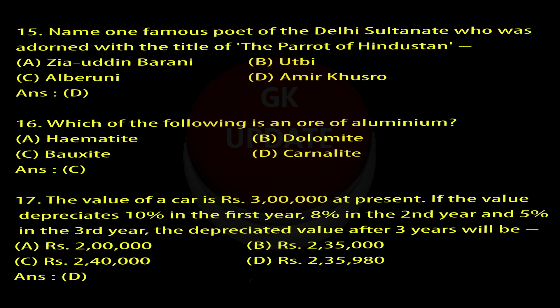Question 17: The value of a car is Rs. 3,00,000 at present. If the value depreciates 10% in the 1st year, 8% in the 2nd year and 5% in the 3rd year, the depreciated value after 3 years will be: A. Rs. 2,00,000, B. Rs. 2,35,000, C. Rs. 2,40,000, D. Rs. 2,35,980. Answer: D.